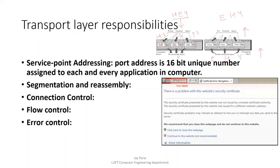These numbered segments travel to your friend's device. At the receiver side, because each segment has a number, the transport layer knows which data is first and which comes after, so it can reassemble and deliver the proper message. The responsibility of the transport layer is segmentation at the sender side — dividing data into segments and assigning numbers — and reassembly at the receiver side, combining data back together.